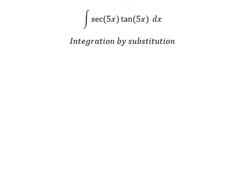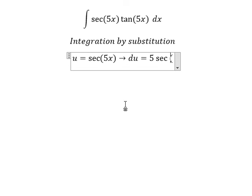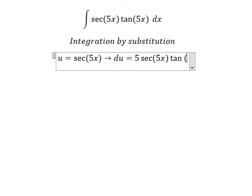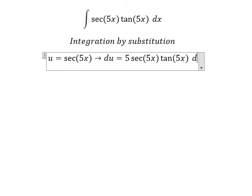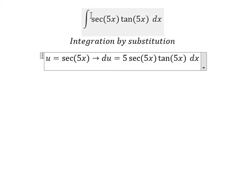So I will put u equal to secant of 5x. If we do the derivative of this one, we have 5 sec(5x) tan(5x) dx. Because we don't have number 5 in here, so we divide both sides by number 5.